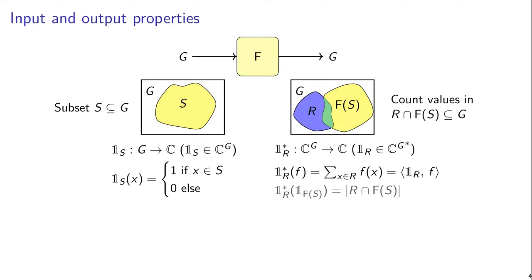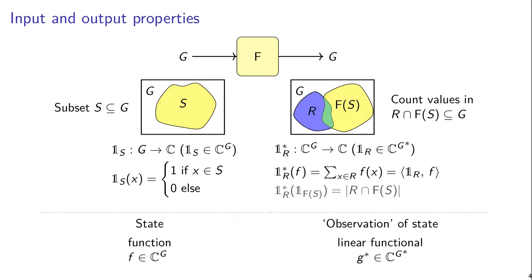Generalizing this, we could say that an input property is like a state — it represents what the state is. Mathematically it is represented by a function from G to the complex numbers. This is like saying our input is a collection of values, and for each of those values we assign a given weight, and that weight is a complex number. The observation of the state then corresponds to an output property.